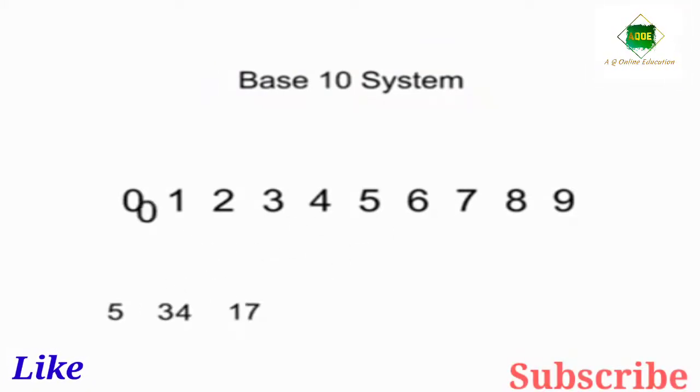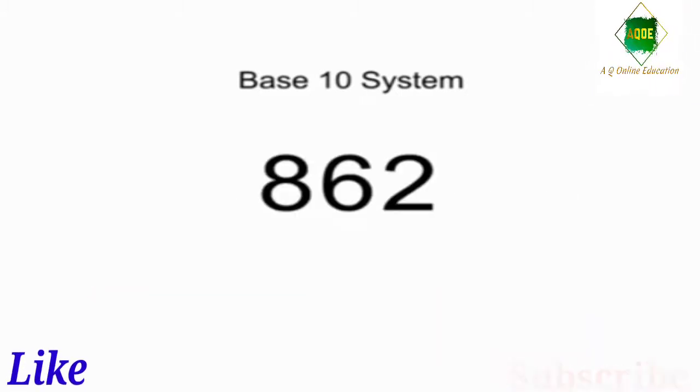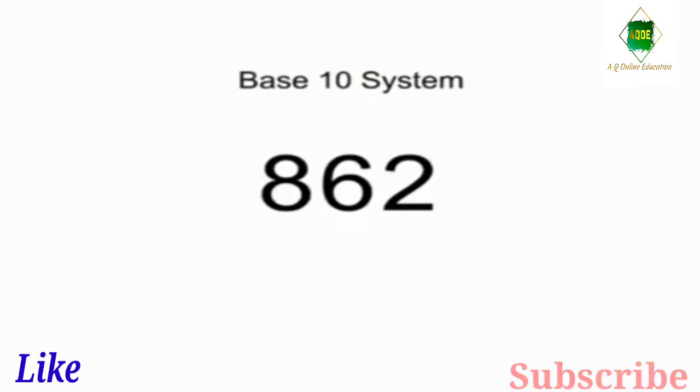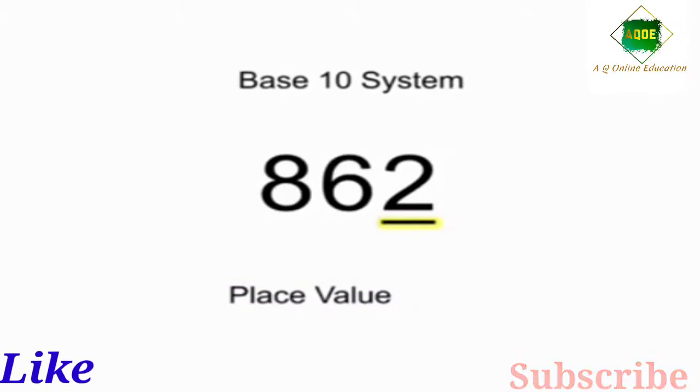The position of a digit in the base 10 system determines its magnitude. This is referred to as place value. Moving from right to left, we multiply each preceding digit position by 10.